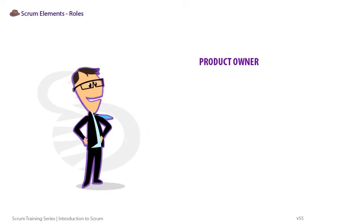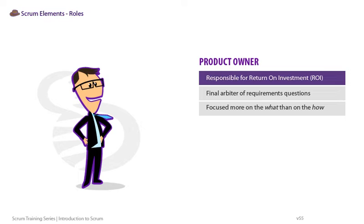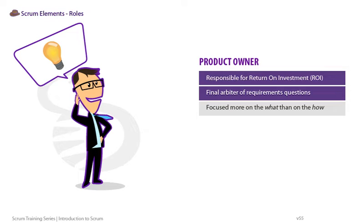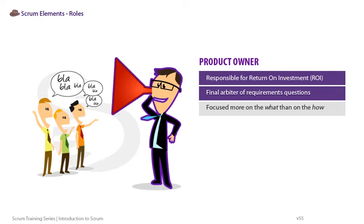The Product Owner is the single individual responsible for return on investment, or ROI, of the product development effort. The Product Owner mostly exerts that influence through the prioritization of the product backlog and is the final arbiter of requirements questions. That doesn't mean they give you all the detailed requirements up front. The Product Owner must have the vision behind product development. If anyone wants anything from the team, they need to work through the Product Owner. He or she is the one person making prioritization decisions, focused more on the what than on the how.